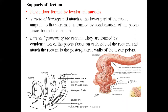There is another support: the lateral ligaments of the rectum. These are the ligaments seen on either side of the rectum. They are formed by condensation of the pelvic fascia on each side of the rectum, attaching the rectum to the posterolateral walls of the lesser pelvis. So the pelvic fascia is modified on either side of the rectum, attaching it to the lateral pelvic wall — that is called the lateral ligament of the rectum.